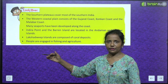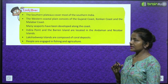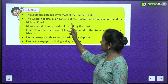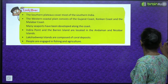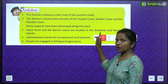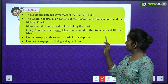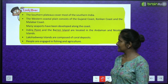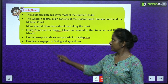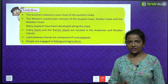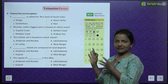Let's look over what we have read in this chapter. The southern plateaus cover most of southern India. The western coastal plain consists of Gujarat coast, Konkan coast, and Malabar coast. Many seaports have been developed along the coast. Indira Point and the Barren Island are located in the Andaman and Nicobar Islands. Lakshadweep islands are composed of coral deposits. People are engaged in fishing and agriculture.